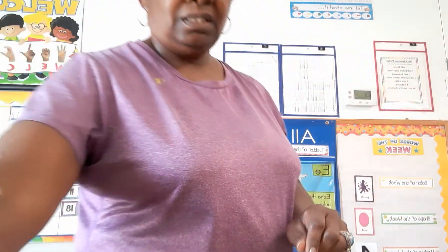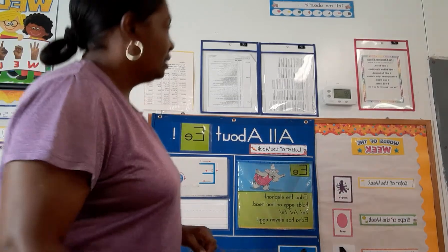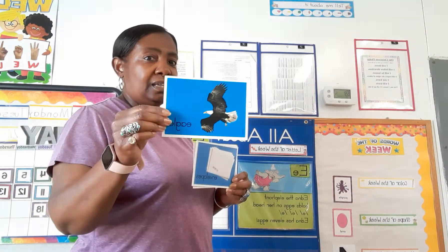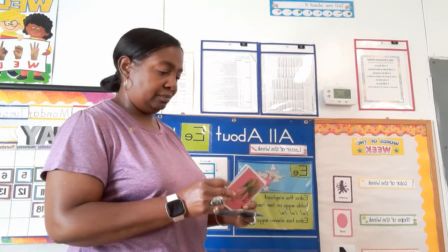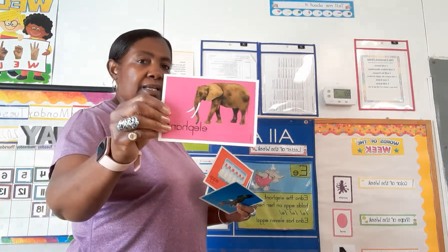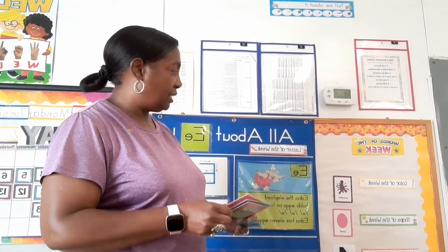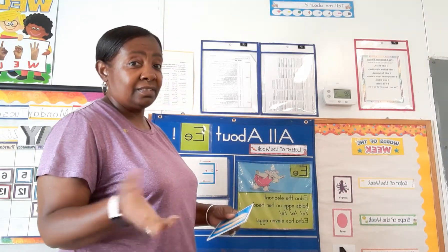Let's get started. We say the words of the week. We're going to talk about words that begin with the letter E, and that was eagle. The color of the week is purple, the shape of the week is an oval, and the number is four.